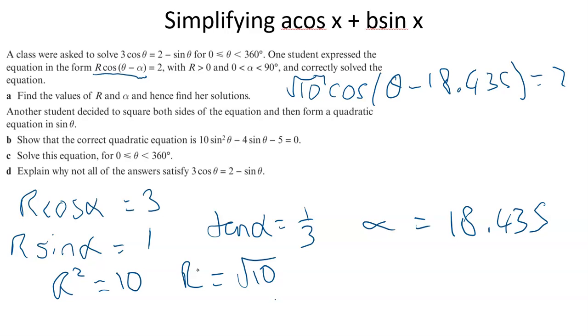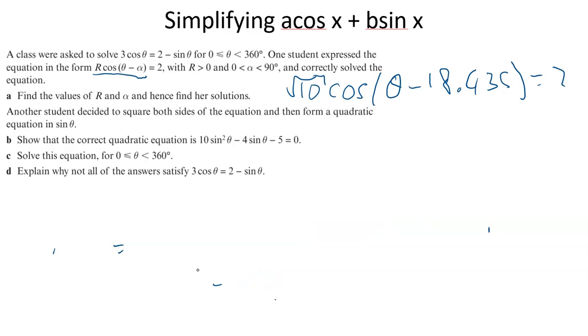Another student decided to square both sides of the equation and form a quadratic in sin(θ). Show that the correct quadratic is this. Let's give it a go. Square both sides - that's legitimate. Left side gives 9cos²(θ). Squaring the right side, you have to do it in brackets: (2 - sin(θ))² = 4 - 4sin(θ) + sin²(θ).